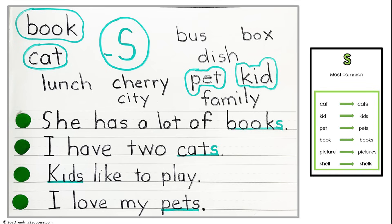Our first activity is adding s to the end of words to make them plural. Before starting this activity, refer to the s most common card and review the singular and plural words on the card. Keep the card available for kids to reference.